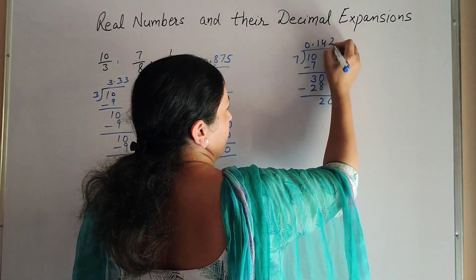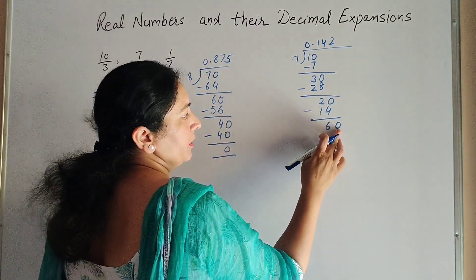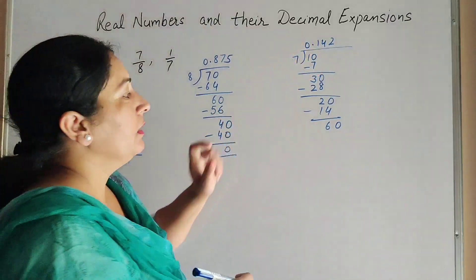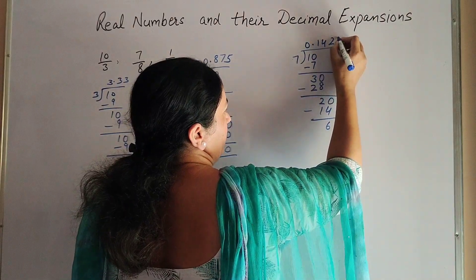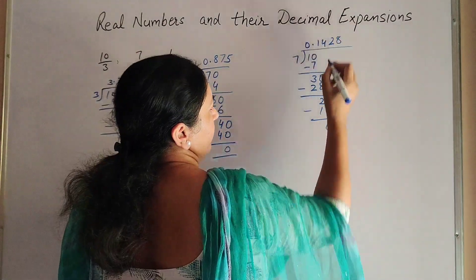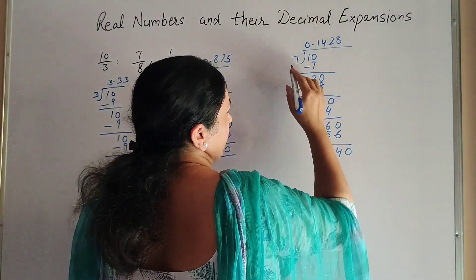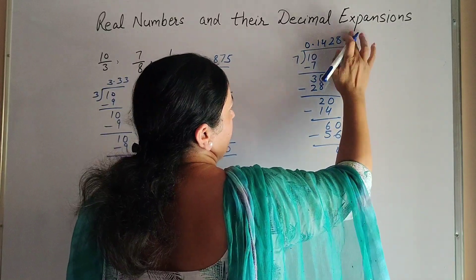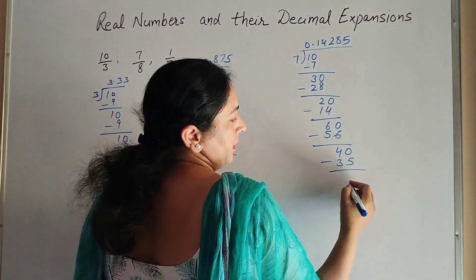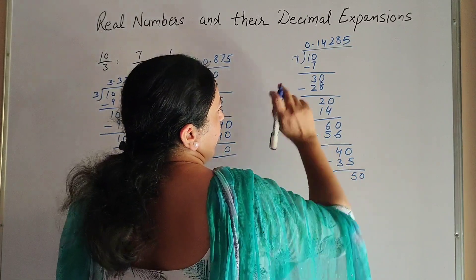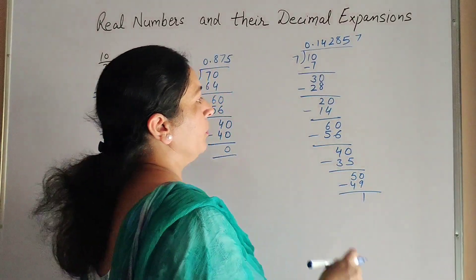Now 20 divided by 7: 2 sevens are 14, 20 minus 14 gives 6. We add 0. Now 60 divided by 7: 8 sevens are 56, 60 minus 56 gives 4. Now 40 divided by 7: 5 sevens are 35, 40 minus 35 gives 5. We add 0. Now 7 sevens are 49, 50 minus 49 gives 1.